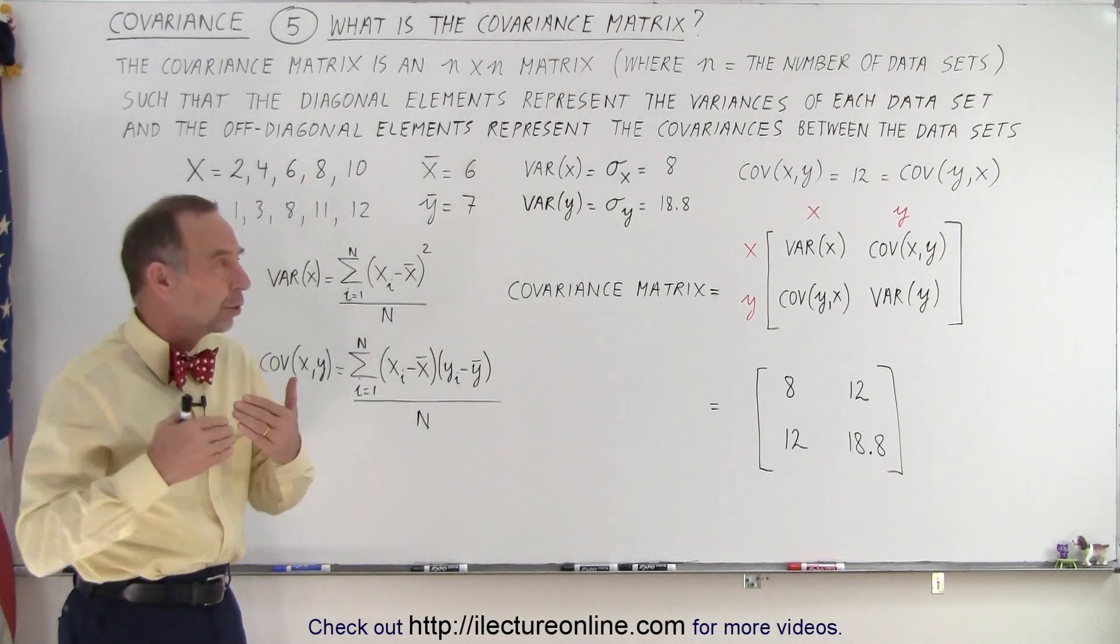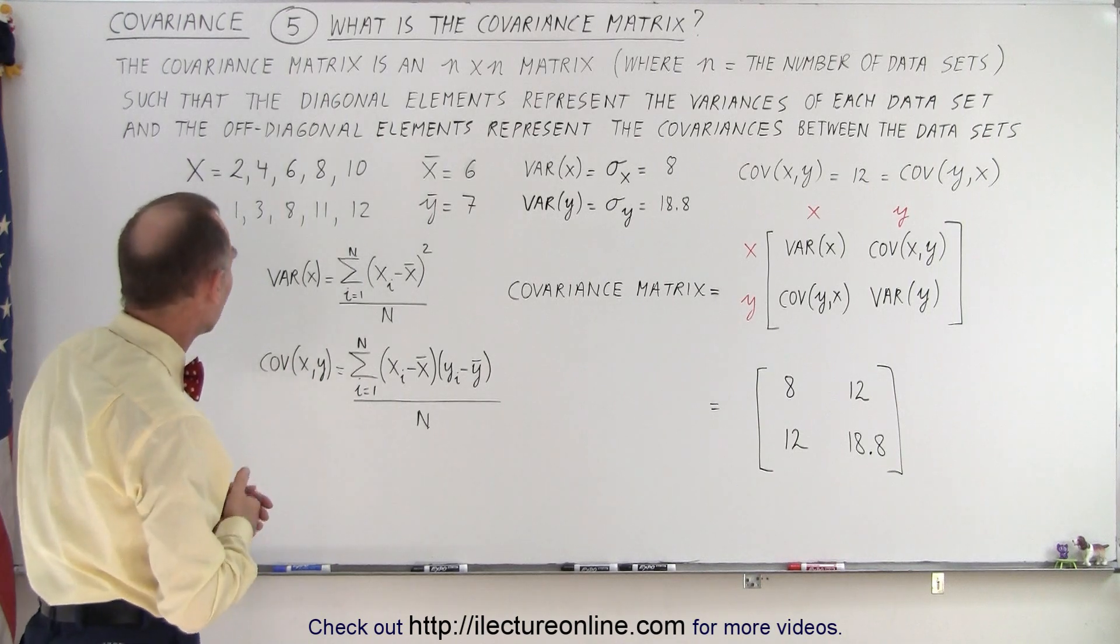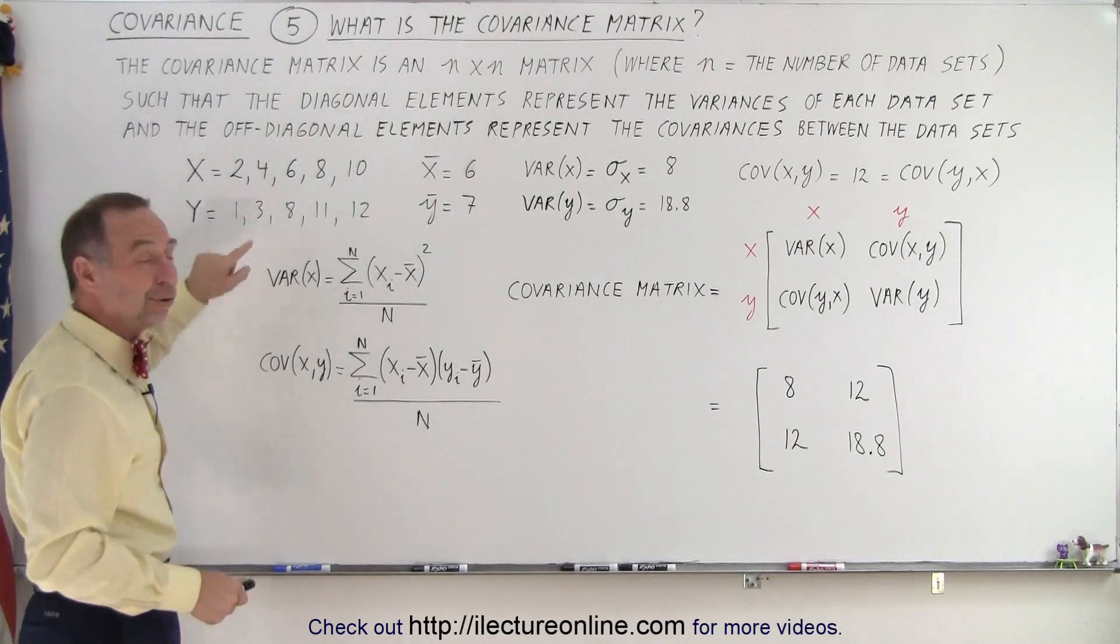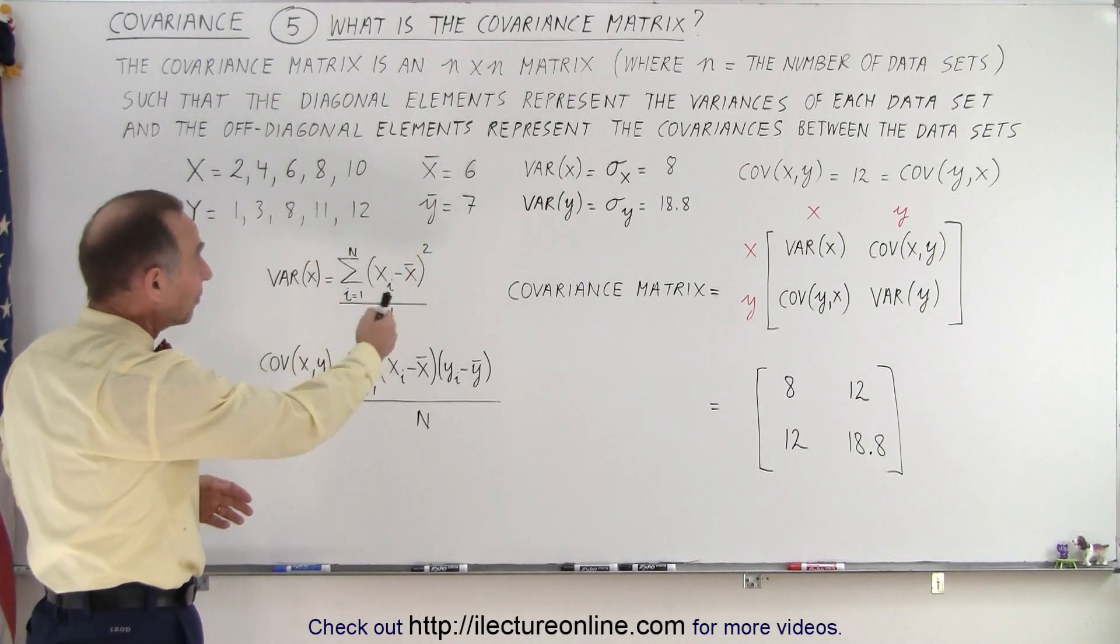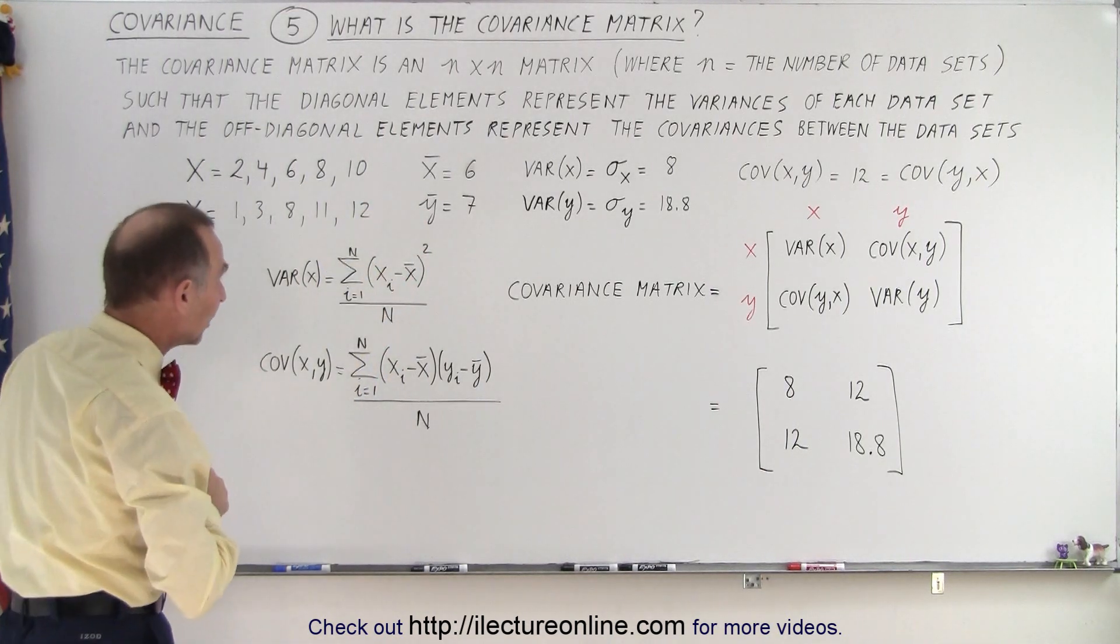Here we have an example of a covariance matrix with two data sets, x and y. Here they are defined - we've seen these two before. We've calculated the average, the variance, and the covariance of these particular data sets.